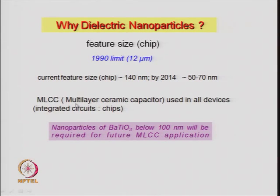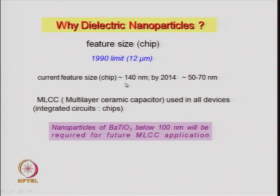Barium titanate acts as a capacitor and is involved in the fabrication of chips or applied in devices. The feature size of a chip was about 12 microns in 1990 — below 12 microns people could not make a chip. Today the size has been reduced to around 114 nm in the best cases, and it is predicted that by 2014 the size will be reduced to 50–70 nanometers. The decrease in chip size has the advantage that you can put many more chips in the same area.